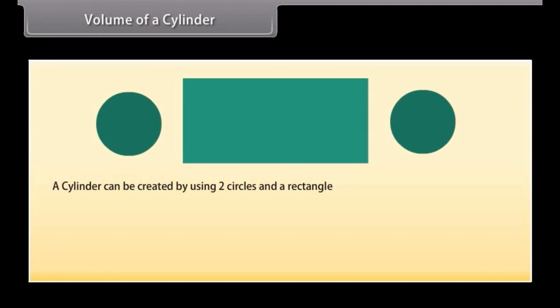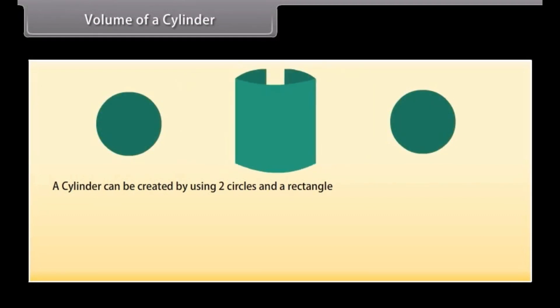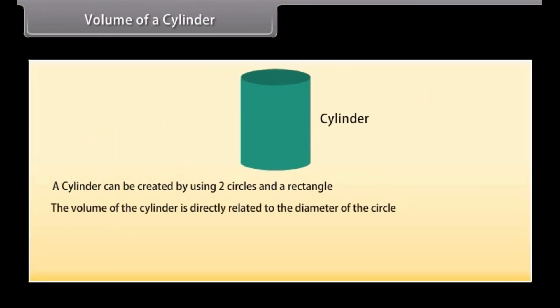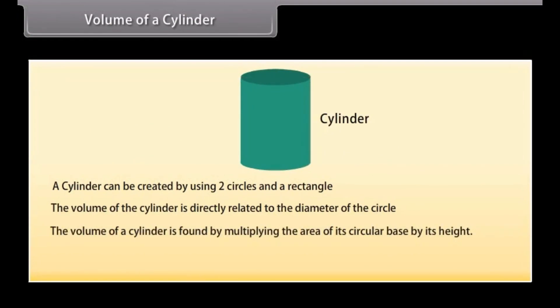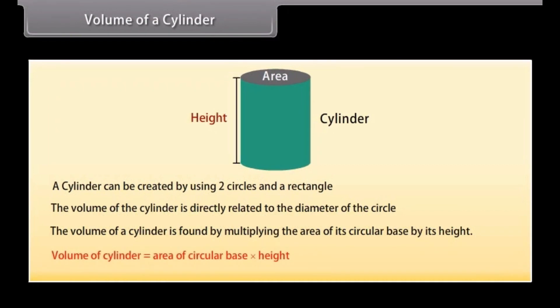A cylinder can be created by using two circles and a rectangle. The volume of the cylinder is directly related to the diameter of the circle. The volume of a cylinder is found by multiplying the area of its circular base by its height, meaning volume = area of circular base × height.